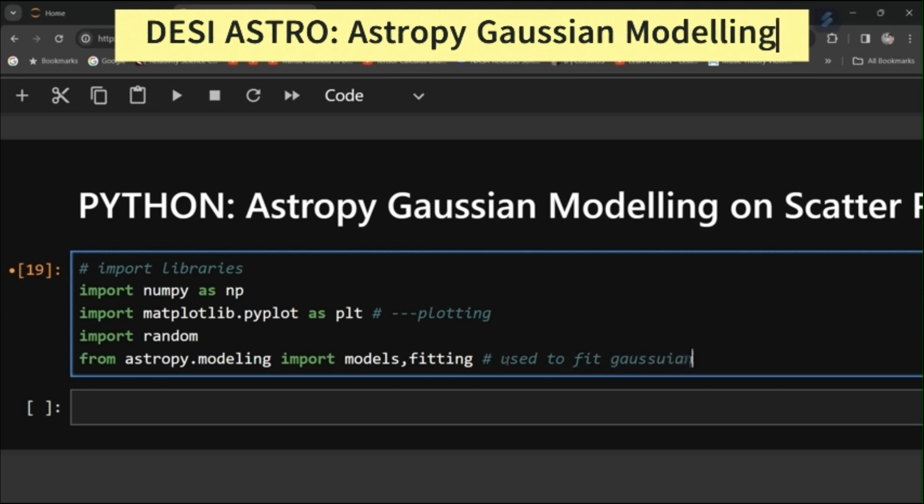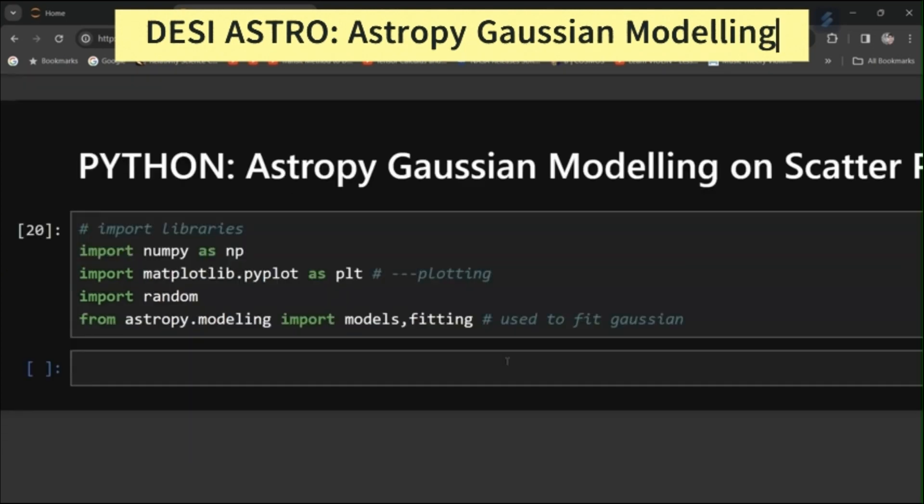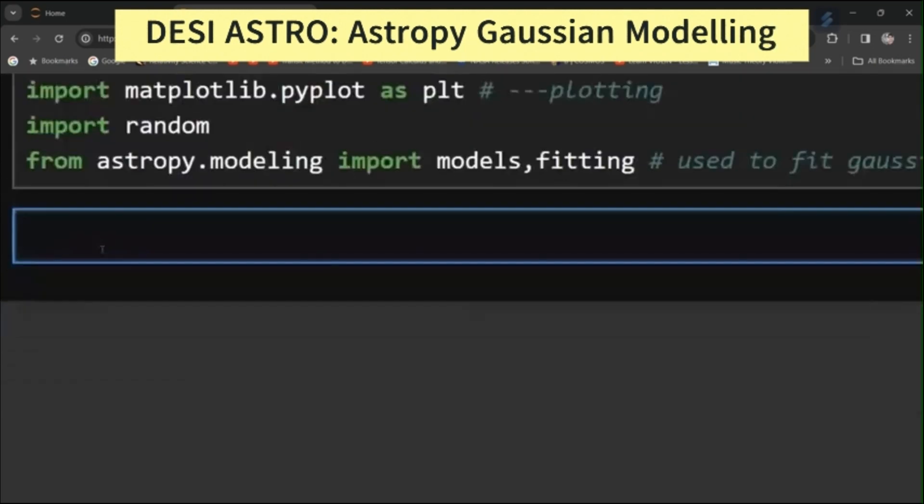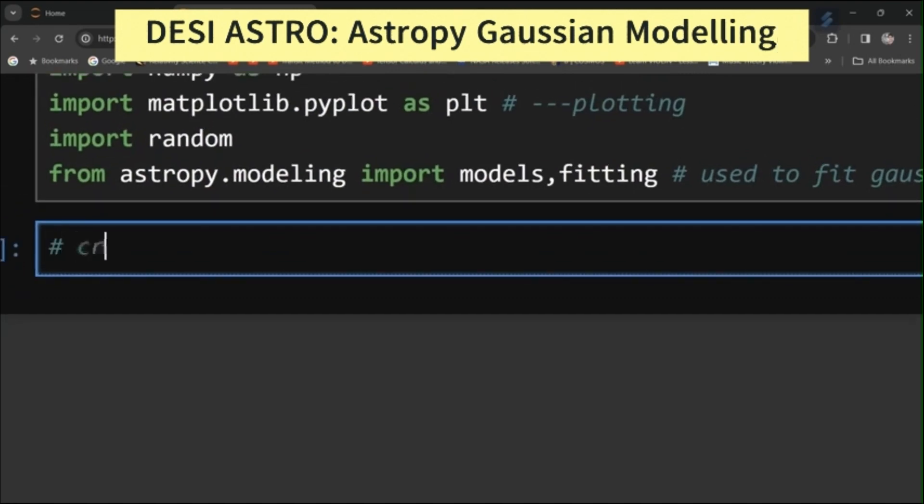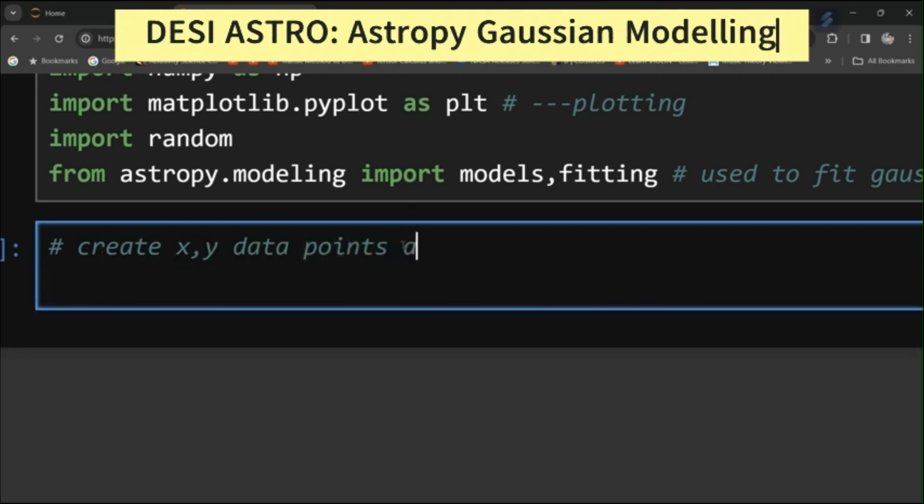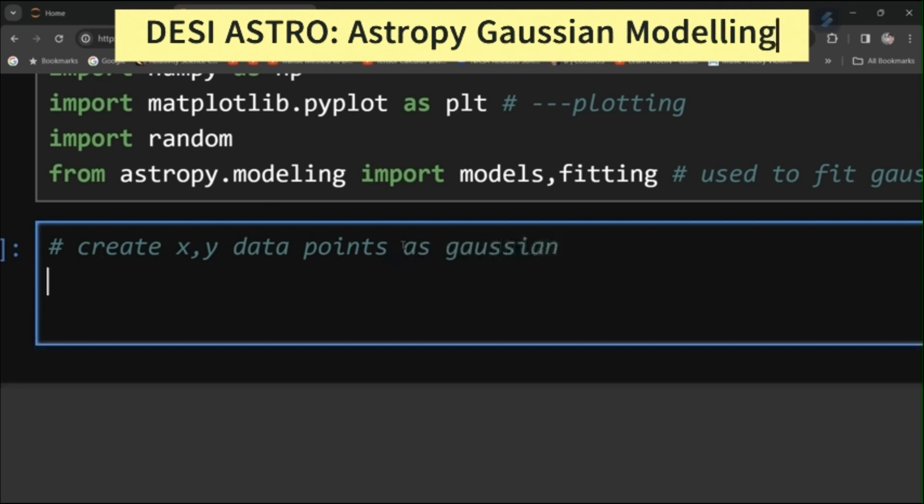Now create xy data points as Gaussian. For that I will define my x equal to np.linspace and I will go from minus 10 to 40 and I will take 50 data points.